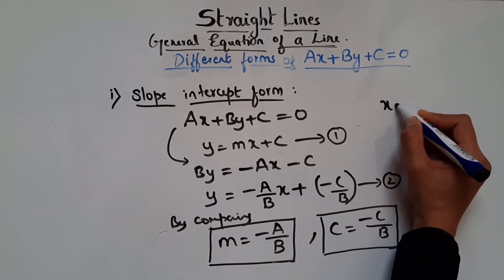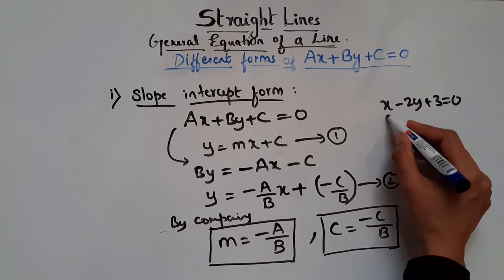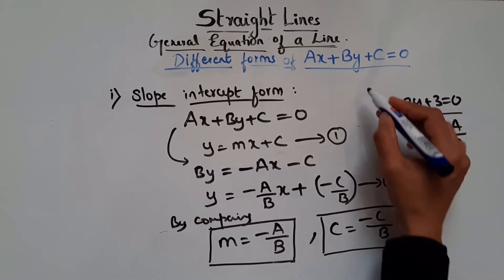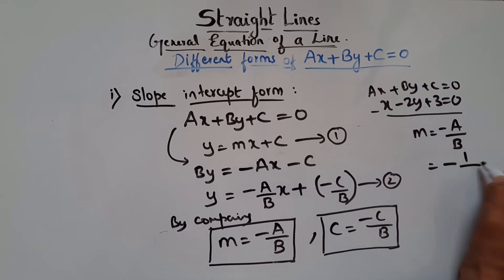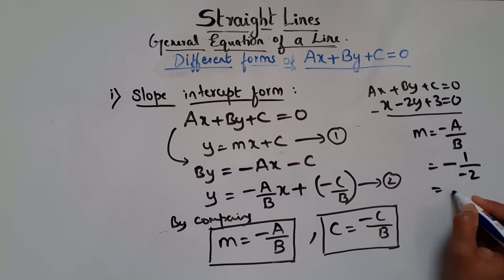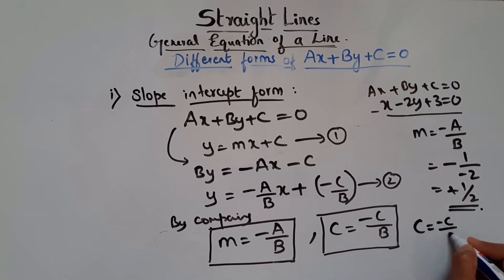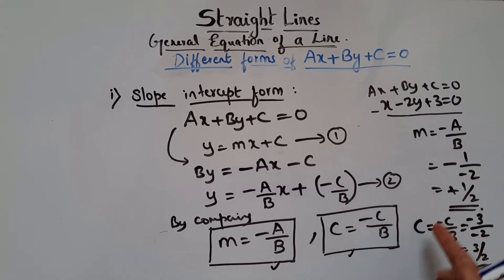For example, given the equation x minus 2y plus 3 equals 0, the slope is m equals minus A over B. Here A is 1 and B is minus 2, so m equals minus 1 over minus 2 equals one-half. The y-intercept is minus C over B: C is 3, B is minus 2, so the y-intercept equals 3 over 2. If you know these formulas, you can directly substitute to find the slope and y-intercept.